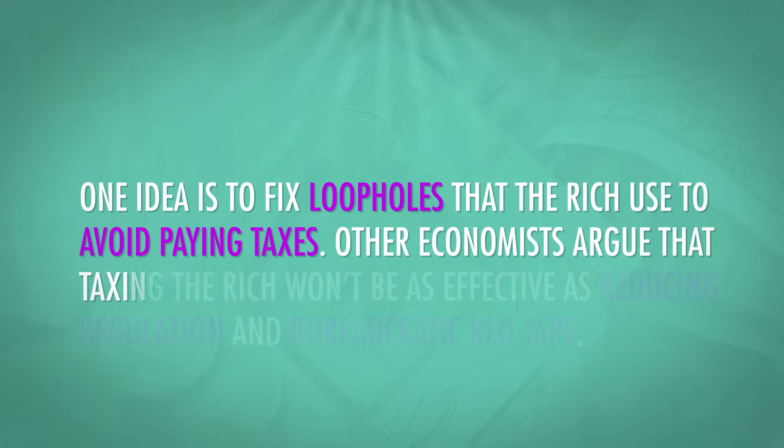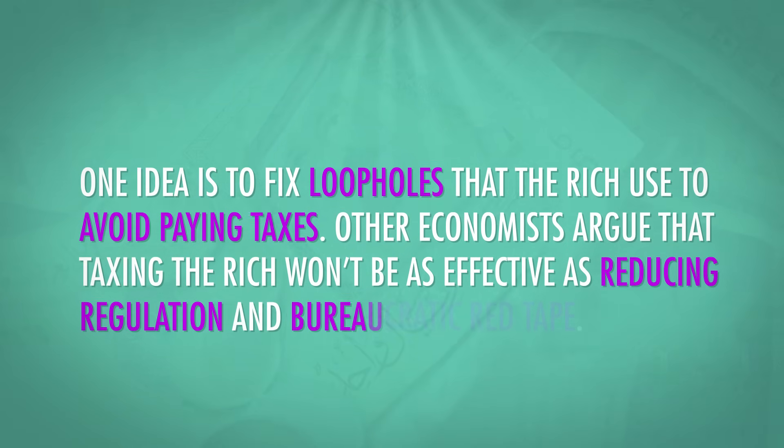One idea is to fix loopholes that the rich use to avoid paying taxes. Other economists argue that taxing the rich won't be as effective as reducing regulation and bureaucratic red tape. It's unclear which path we're going to take, but extreme income inequality at the national and global level needs to be addressed. Motivation may come from a genuine desire to help people and level the playing field, or the fear of Hunger Games-style social upheaval — but either way, the issue can't be ignored. Even Adam Smith, the most classical of classical economists, said: 'No society can surely be flourishing and happy of which the far greater part of the members are poor and miserable.' Thanks for watching. We'll see you next week.